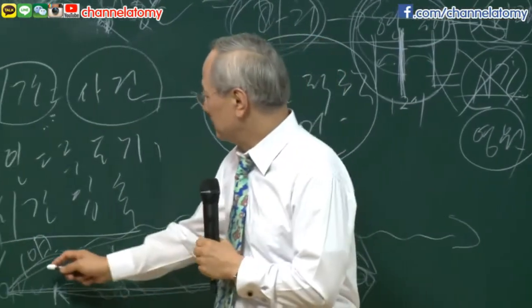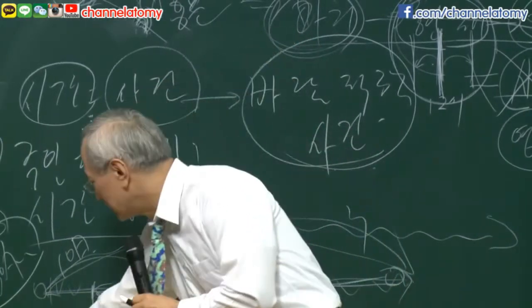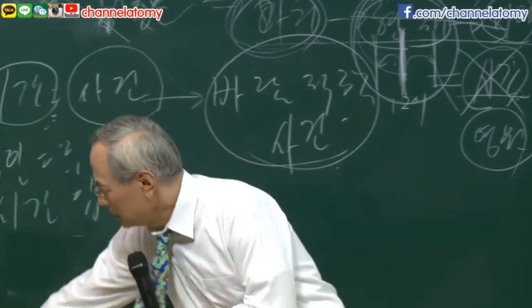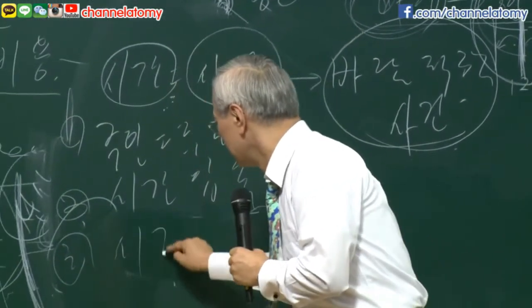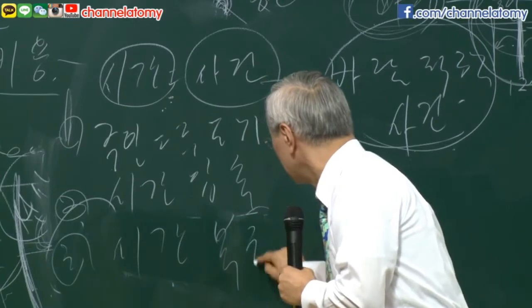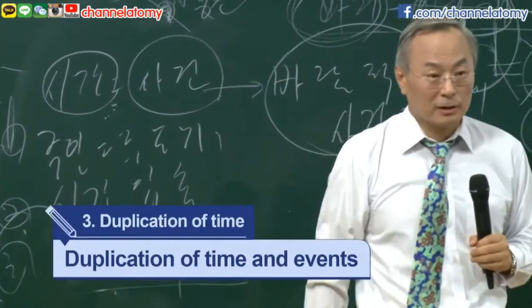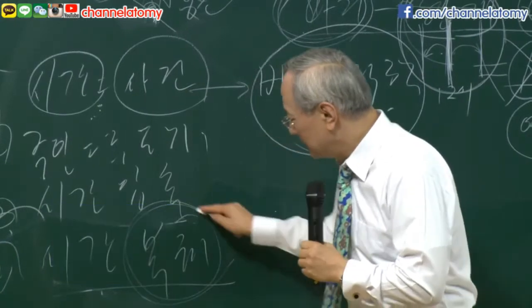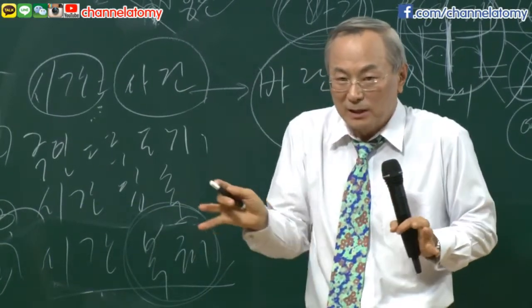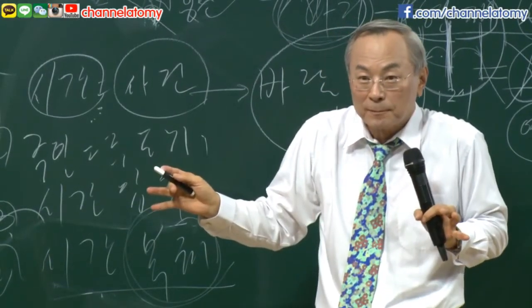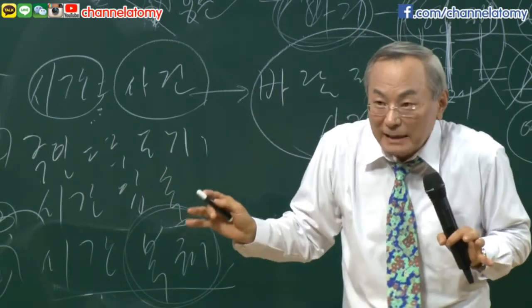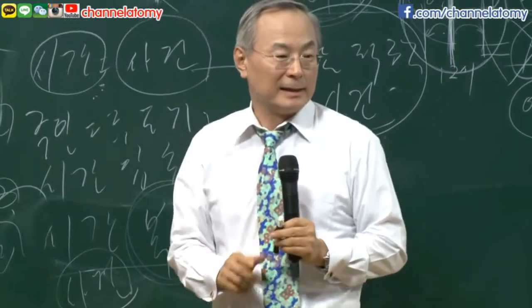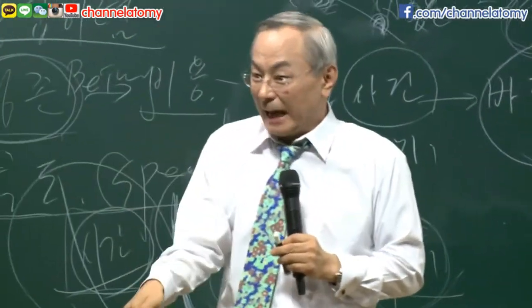In any case, you need to utilize time by compressing it. Another characteristic of time is that duplication is possible. Duplication. Since time can be duplicated, it allows Atomy to have great speed. Duplicating time means that we are copying events.